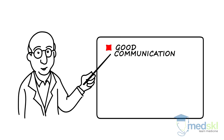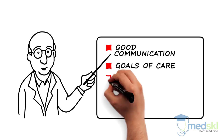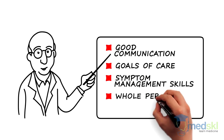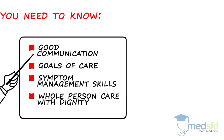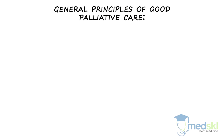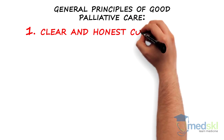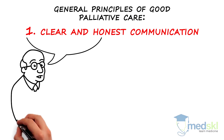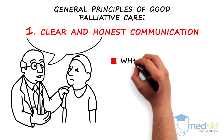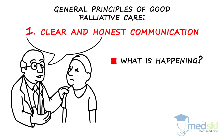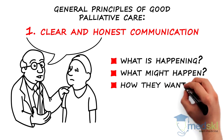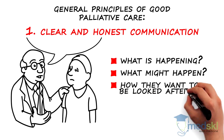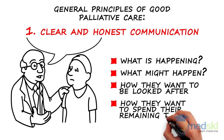Good communication, the importance of goals of care, symptom management skills, and whole person care with dignity are what you need to know. Here are some general principles of good palliative care. 1. Clear and honest communication is a key to good palliative care. Patients want to know what is happening and what the future might hold. They have the right to know what might happen. They can choose how they want to be looked after, and how to spend their remaining time and energy.